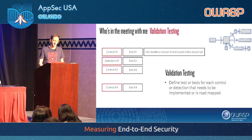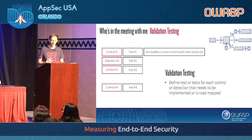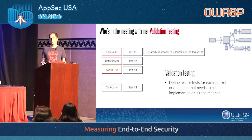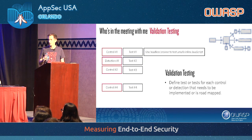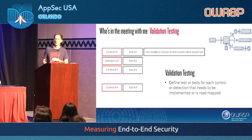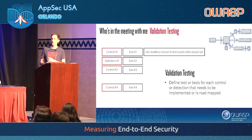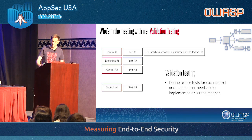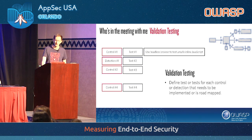The last part is validation testing. We have one validation test per control and per detection, but you could have multiples. For cross-site scripting or CSP, you'd want multiple tests running every night to test that it's actually working. What that gives us is confidence that these controls and detections actually work — not that we just placed them there, but that they are actually stopping scripted attacks.